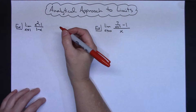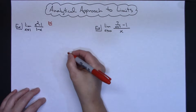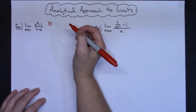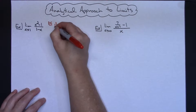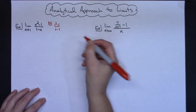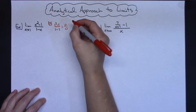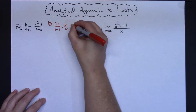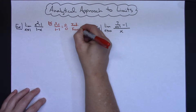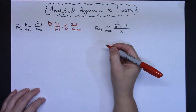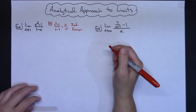The first thing you always want to try with any limit is a direct substitution just to see what you get. So plugging 1 in, I get 1 squared minus 1 over 1 minus 1, and that becomes 0 over 0. That tells us it is an indeterminate form, which means we've got to do more work — there's going to be an answer, we just have to find it.